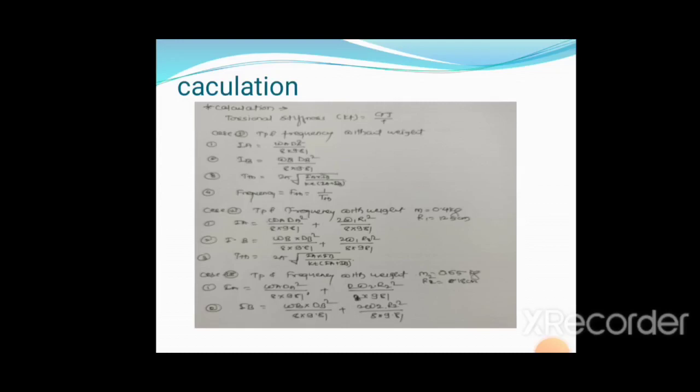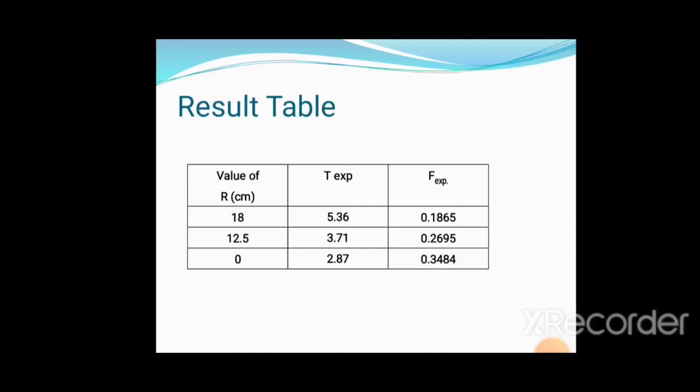Results table shows: at radius 18cm, 12.5cm, and 0cm, experimental times T are 5.36s, 3.71s, and 2.87s respectively. Experimental frequencies f are 0.1865 Hz, 0.2695 Hz, and 0.3484 Hz respectively.